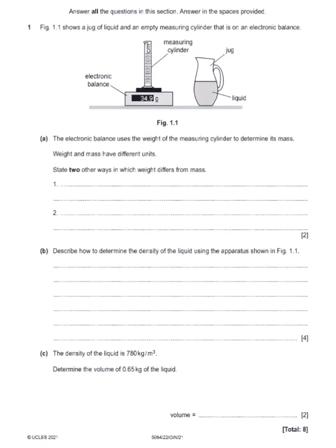Weight and mass have different units — that difference has already been given to us. The question says: state two other ways in which weight differs from mass. Since they've already given us that mass and weight have different units, we are not supposed to say that mass is measured in kilograms whereas weight is measured in newtons.